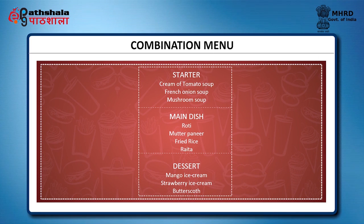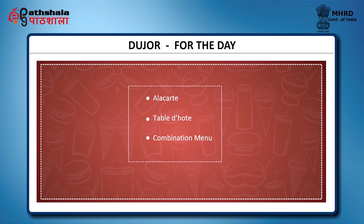In a combination menu, choices are available for certain courses — offering flexibility like à la carte — and for certain dishes it takes the form of a table d'hôte. For example, choices may be available for starters and beverages, but the main dishes may not have any choice. Du jour means 'for the day' in French. The menu can be an à la carte, table d'hôte or combination menu. These menus are used by small food service operations like coffee shops, snack bars and cafeterias.